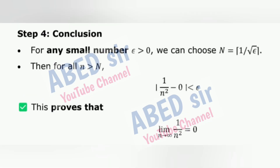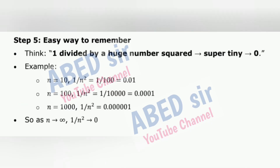Step 4: Conclusion. For any small number ε > 0, we can choose N = 1/√ε. Then for all n > N, this proves that lim(1/n²) = 0. Step 5: Easy Way to Remember — think: 1 divided by a huge number squared is super tiny, approaching 0. For example, as n → ∞, 1/n² → 0.